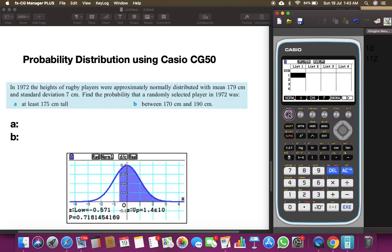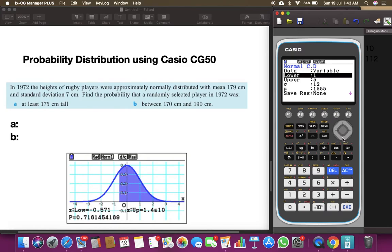It's a question of normally distributed function and we'll take ncd. It's a variable based equation. So our lower value is, as part of question 1, at least 175 centimeters. So our lower randomly selected value is 175.